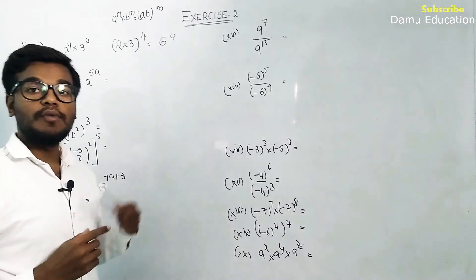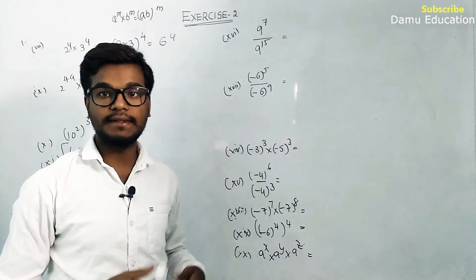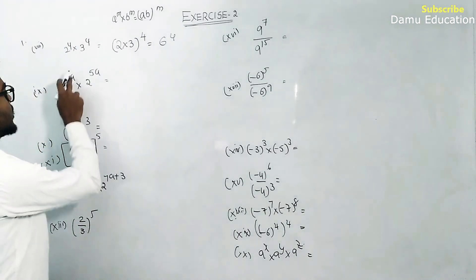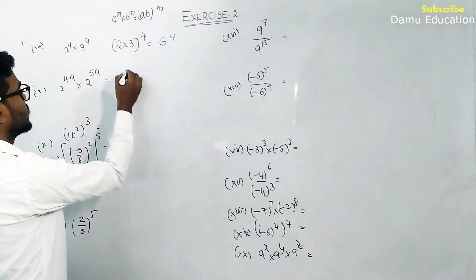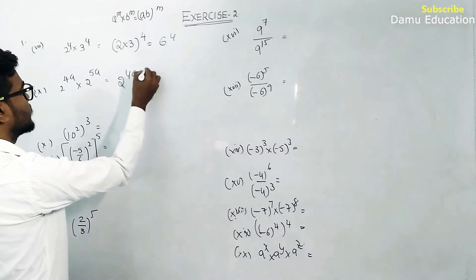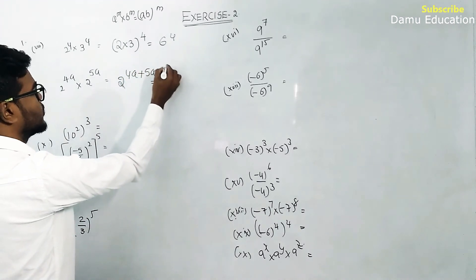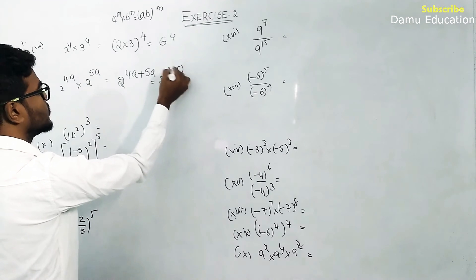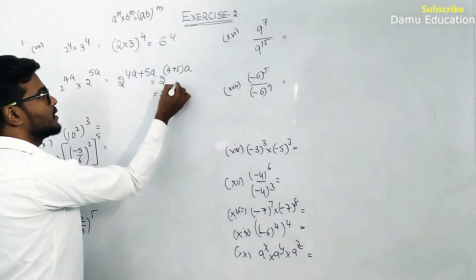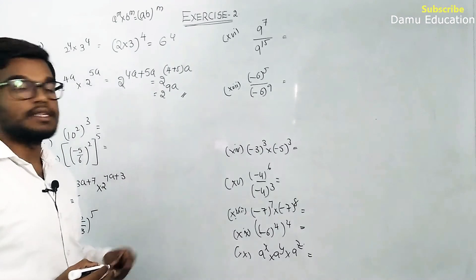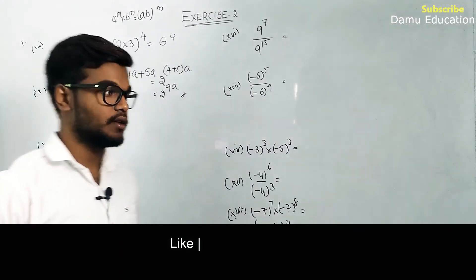Next: bases are same but powers are different. Using a power m into a power n equals a power m plus n. So 2 power 4 plus 5 equals 2 power 9, multiplied by a.